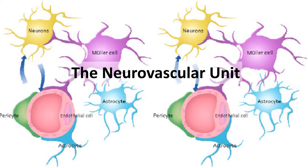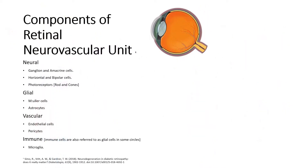How does hyperglycemia cause retinopathy? The neurovascular unit is a simplified way to understand the pathophysiology of diabetes-related retinopathy and how it causes vision loss. This retinal cross-section shows the diversity of cell types, which are categorized according to their functions.